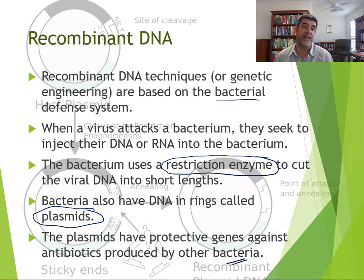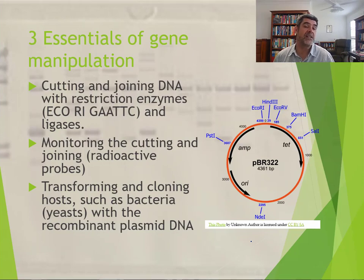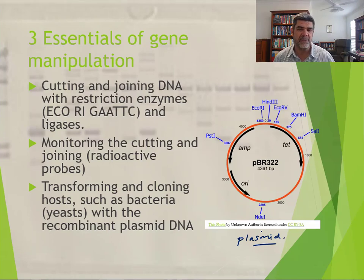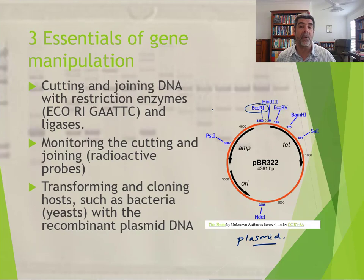There are three essentials when looking at gene manipulation in recombinant DNA. First, we need to be able to cut and rejoin DNA — restriction enzymes help us do this. Here's a piece of a plasmid, and you can see we can cut various parts with different restriction enzymes. One worth remembering is ECO R1 — ECO from E. coli — which was one of the bacteria chosen for much of this early research.